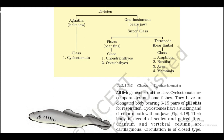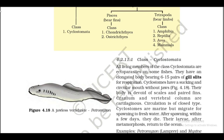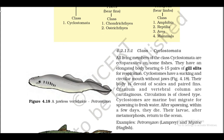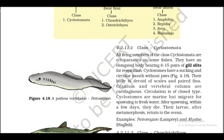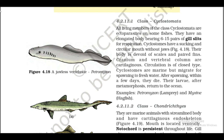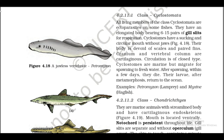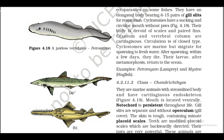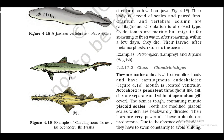4.2.11.1 Class Cyclostomata. All living members of class Cyclostomata are ectoparasites on some fishes. They have an elongated body bearing 6 to 15 pairs of gill slits for respiration. Cyclostomes have a sucking and circular mouth without jaws. Their body is devoid of scales and paired fins; cranium and vertebral column are cartilaginous. Circulation is of closed type. Cyclostomes are marine but migrate to fresh water for spawning. After spawning within a few days they die. Their larvae after metamorphosis return to the ocean. Examples: Petromyzon (lamprey) and Myxine (hagfish).